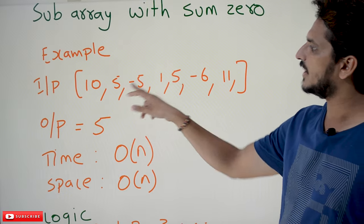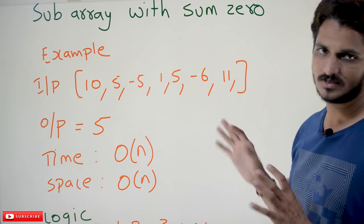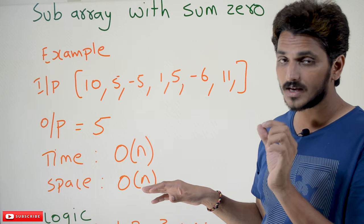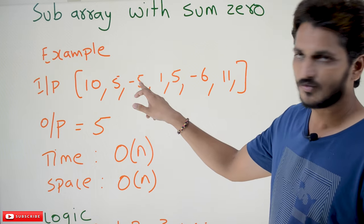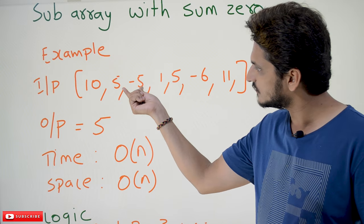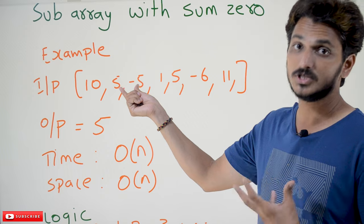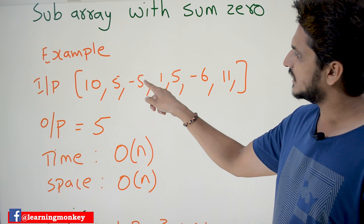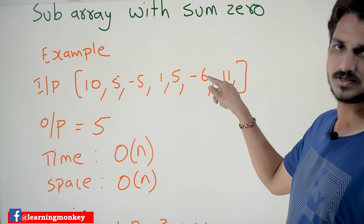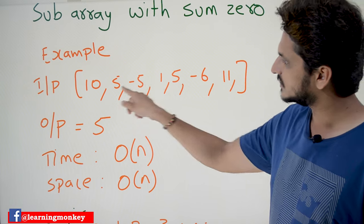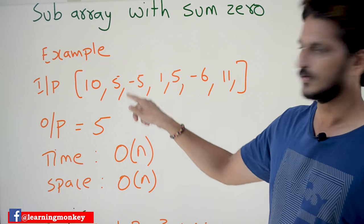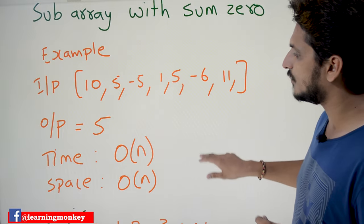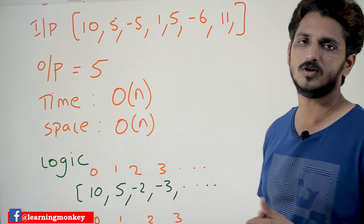Example: [10, 5, -5, 1, 5, -6, 11]. This is the input. The length of the largest subarray with sum zero — 5 minus 5 is zero, but consider: 5, -5, 1, 5, -6 — that summation is also 0, and the length is 5. So our output is 5. We need to maintain time complexity O(n) and space complexity O(n).